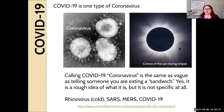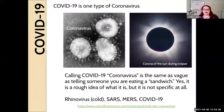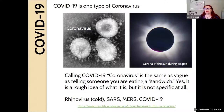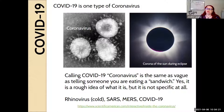COVID-19 is a coronavirus — a group of viruses named because of their corona-like appearance, with a sphere and a hazy area outside, like the corona of the sun during an eclipse. Coronavirus actually refers to a group that includes rhinovirus, SARS, MERS, and COVID-19. Rhinovirus is the common cold. When somebody says they have a coronavirus, that's generic — like saying you're eating a sandwich. When you have a cold, you have a coronavirus. COVID-19 is a very specific coronavirus.